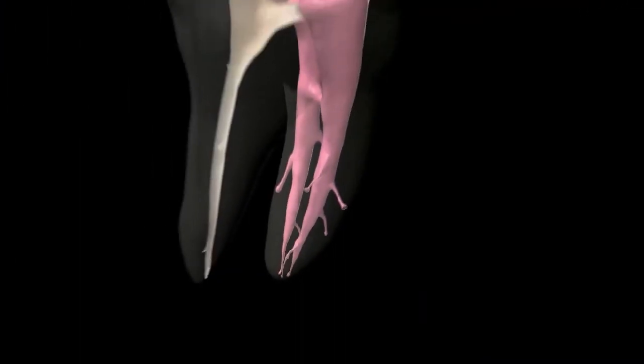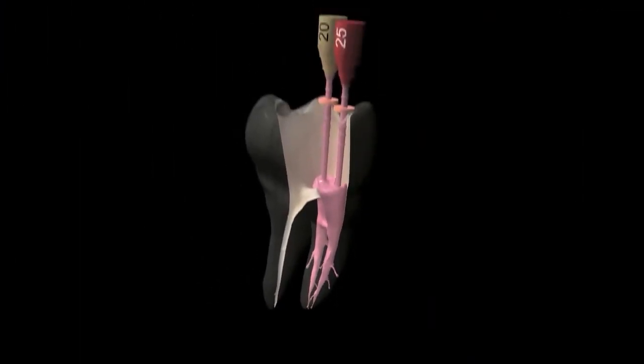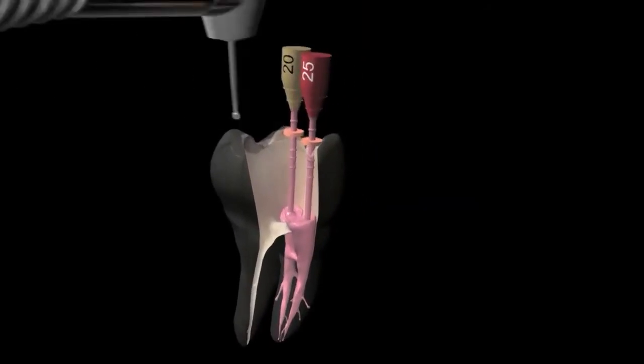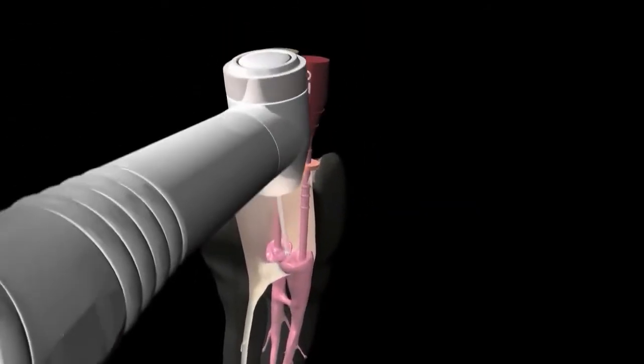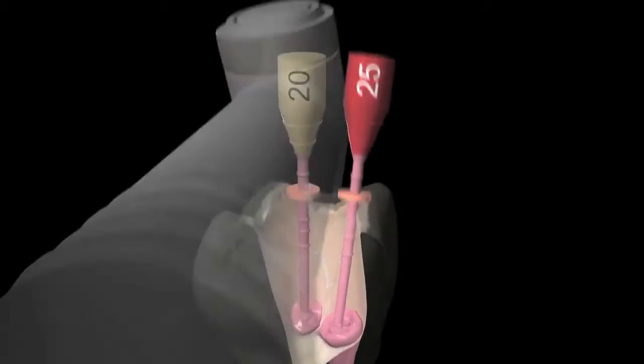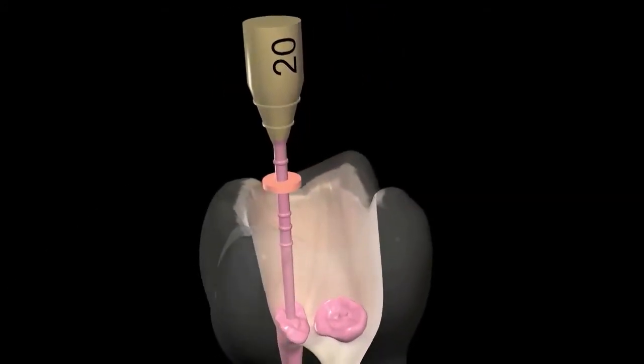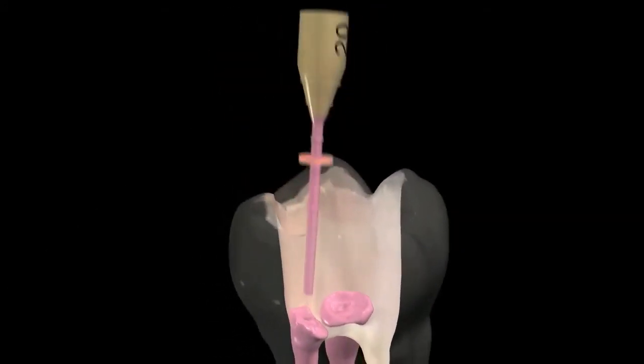When gutta-core reaches its working length, use a round burr to sever the obturator at the canal orifice. You can also remove it by bending from side to side without impacting the seal.